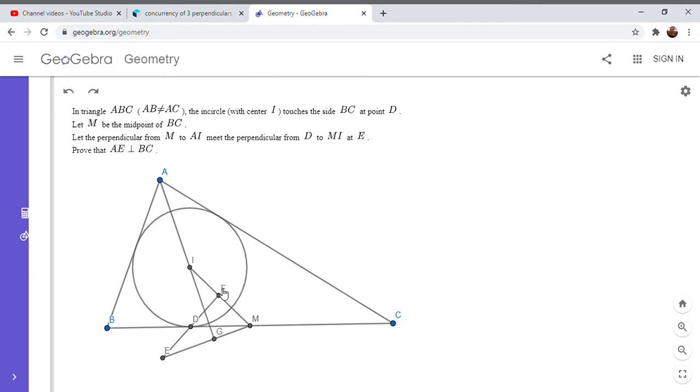So I've labeled the feet of these perpendiculars F and G. It's not a part of the problem statement, but I added it just for clarity. So E is the intersection of these two perpendiculars. And we want to show that AE is perpendicular to BC.